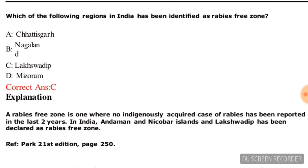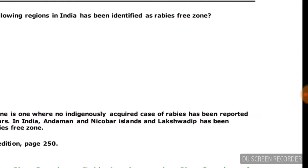Next question: which of the following regions in India has been identified as a rabies-free zone? Options are: Chhattisgarh, Nagaland, Lakshadweep, or Mizoram. The correct answer is Lakshadweep — it is the rabies-free zone in India.